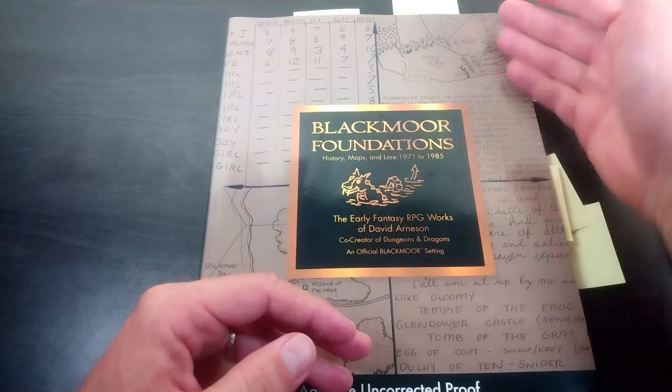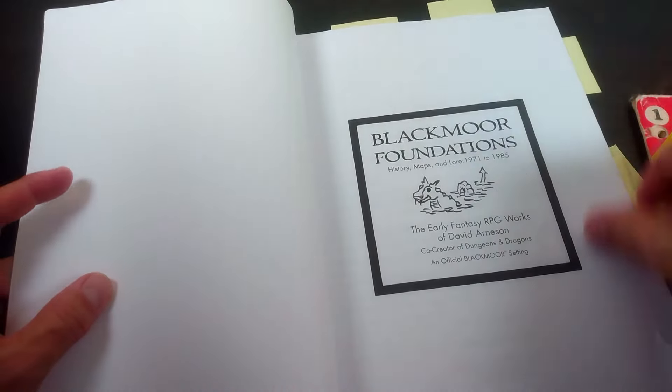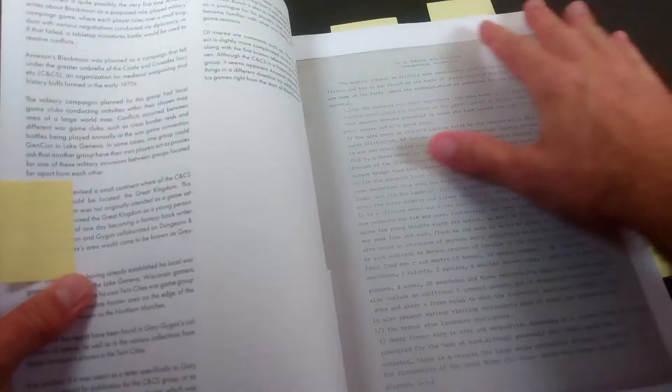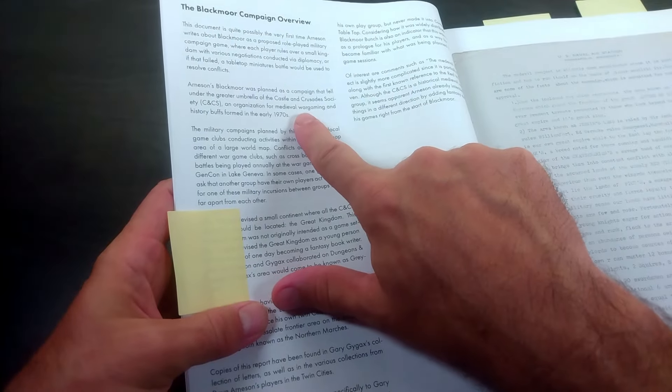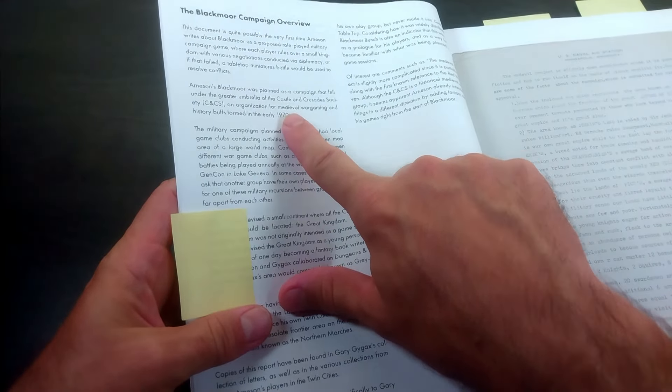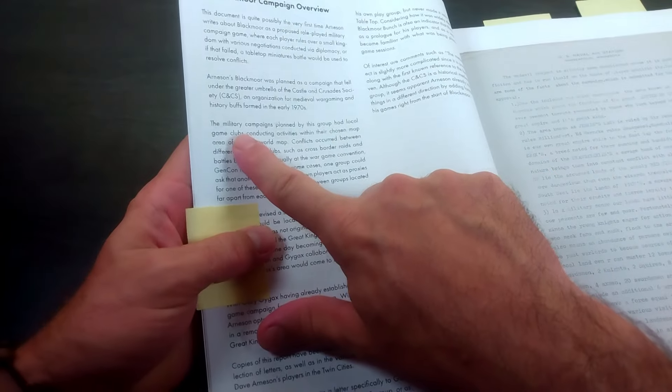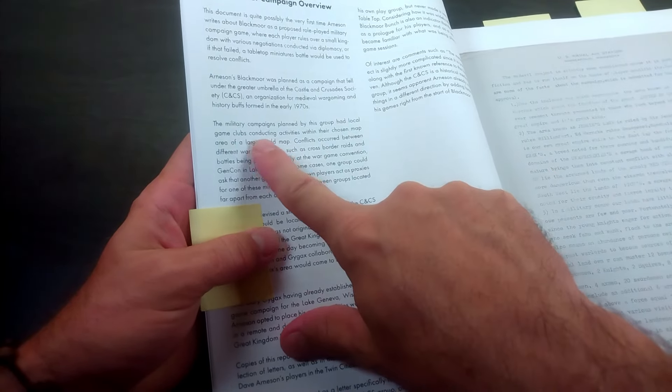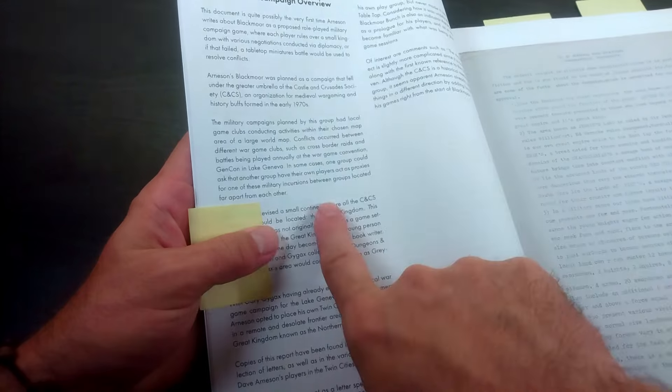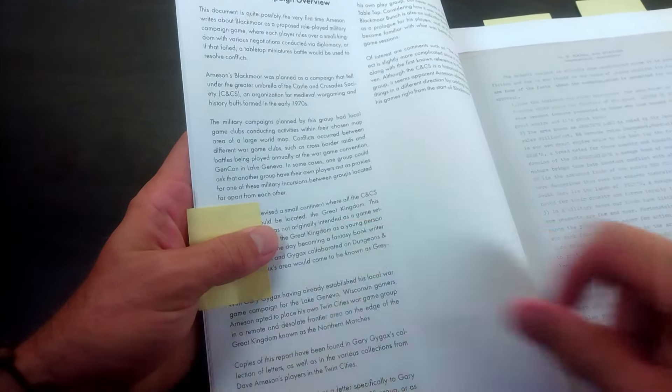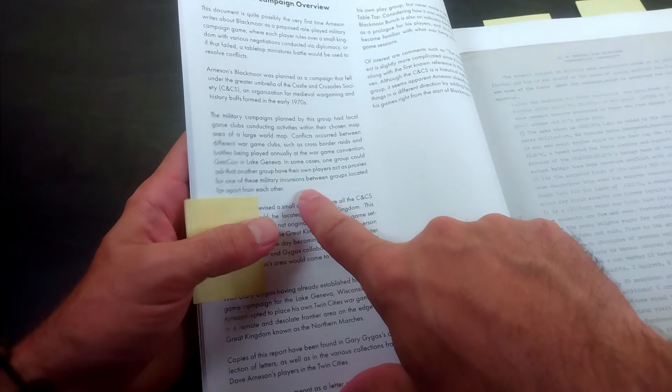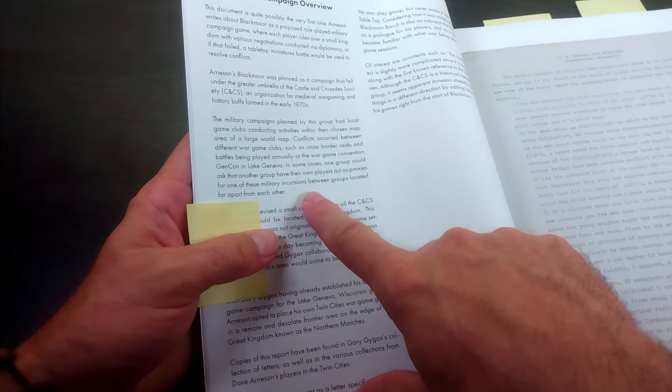The Braunstein grew out of - Arneson's Blackmoor was planned as a campaign that fell under the greater umbrella of the Castle and Crusade Society, an organization for medieval war gaming and history buffs. The military campaigns planned by this group had local game clubs conducting activities within their chosen area. In some cases one group could ask that another group have their players act as proxies for these military incursions between groups located far apart from each other.